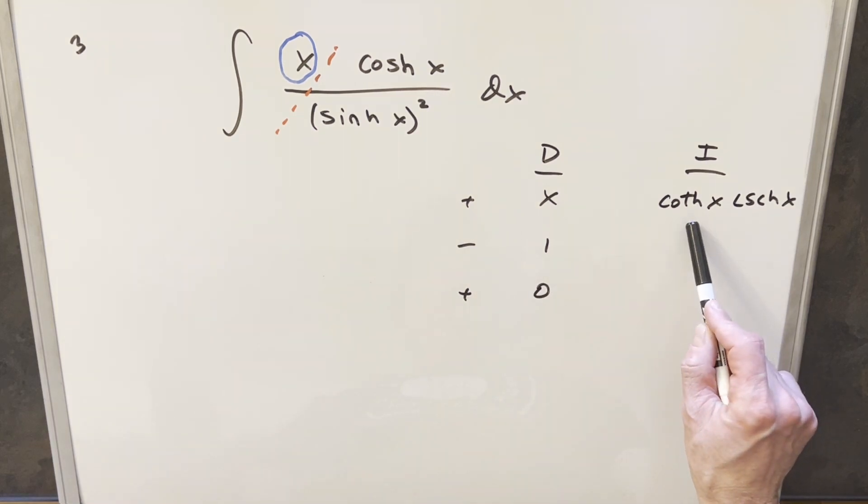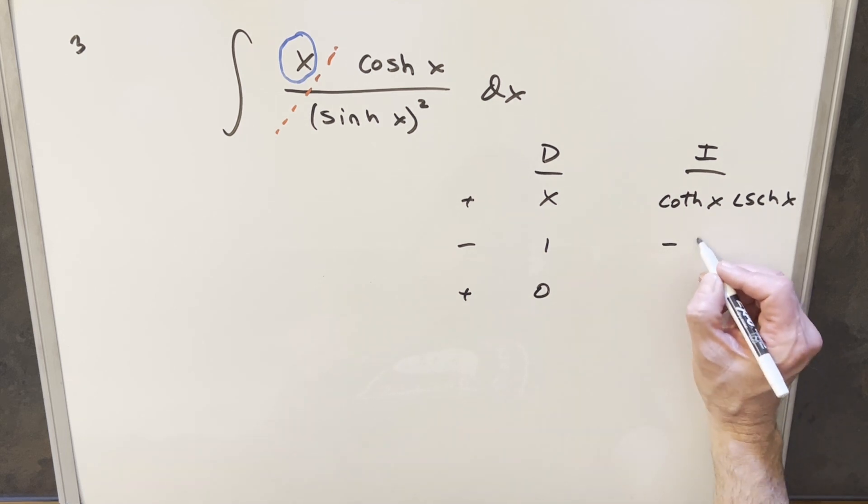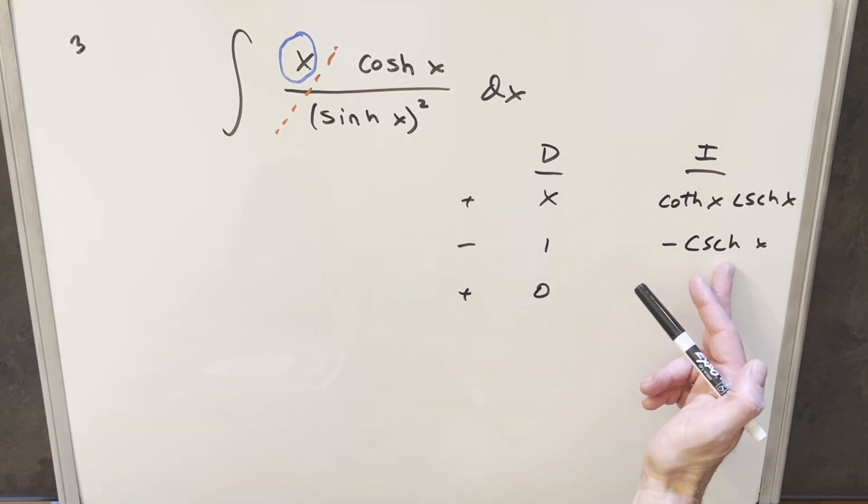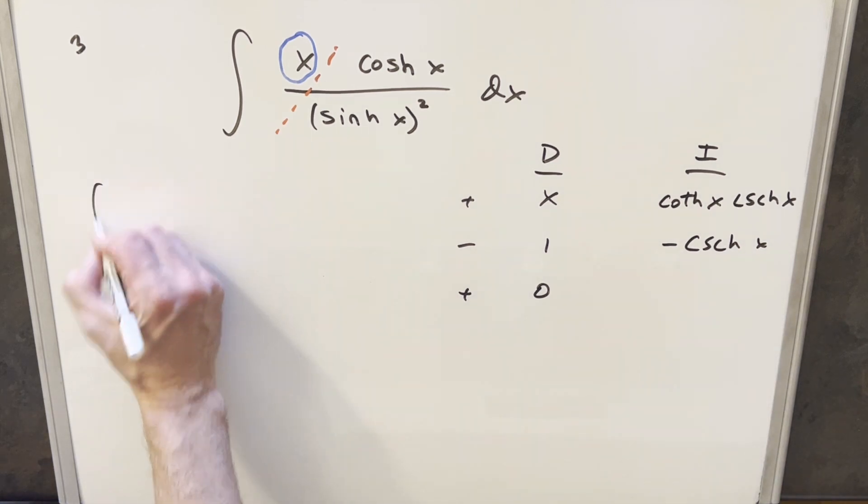Now integrating this, we actually have a formula for this. This is a lot like integrating secant times tangent. So what this is going to be, this is actually going to be minus cosecant of x. But I think I'll just do this one not real fast to see how it works.